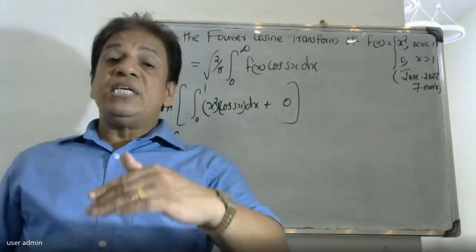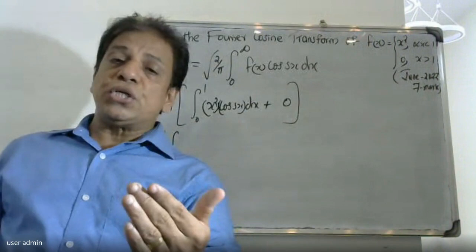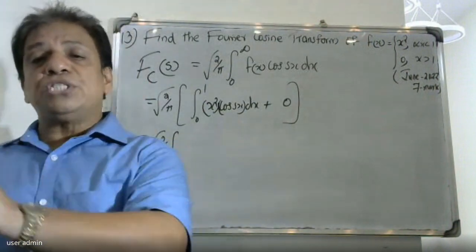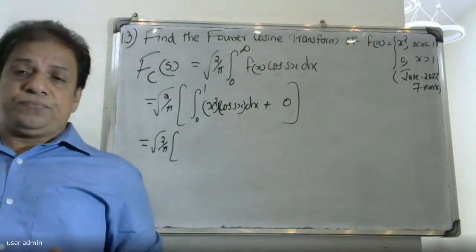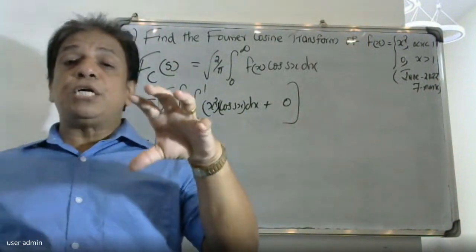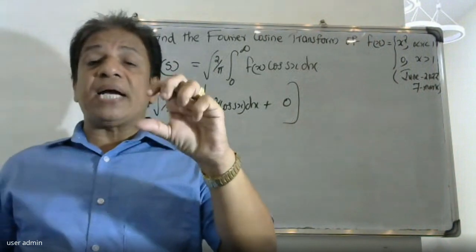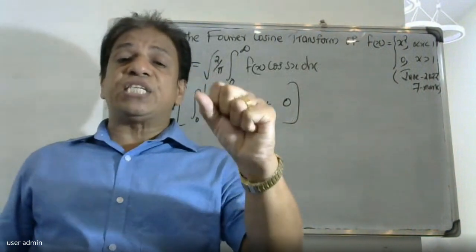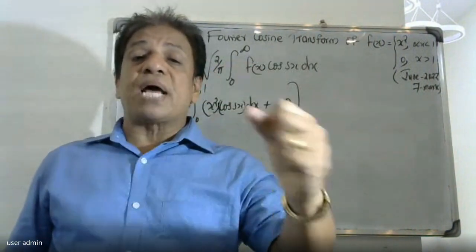That is: first function into integral of second, minus derivative of first then integral of second, then plus derivative of first into integral of second. After integration we can release the brackets.